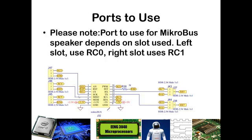It is important to note that depending upon which microbus slot you select, you must use different ports to send in that sound. If you choose the left slot, RC0 will be where that PWM signal comes in. If you choose to put the click board in the rightmost slot, RC1 will be used to generate that sound.